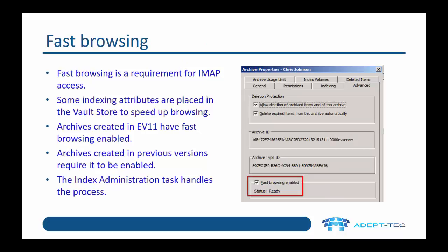Another requirement for IMAP access is that fast browsing is enabled. This was introduced in EV11 and specifically to support IMAP — some indexing attributes are placed in the vault store to speed up browsing. Archives created in EV11 will always have fast browsing enabled, but archives created in previous versions require it to be enabled. When you enable a user for IMAP, if they don't have fast browsing enabled, a request will be made to the index administration task, which handles actually enabling fast browsing on the archive. Until fast browsing has been enabled, the user won't be able to use IMAP.